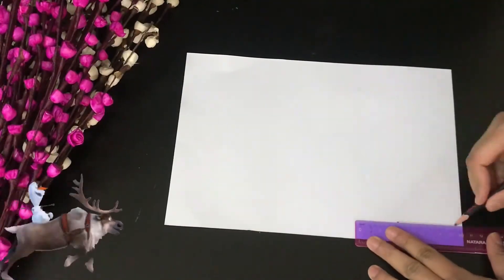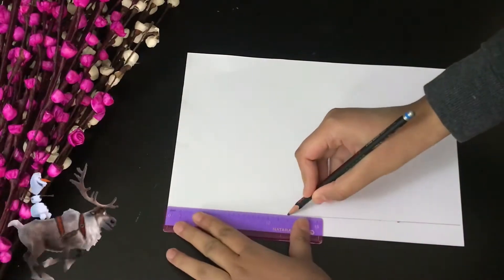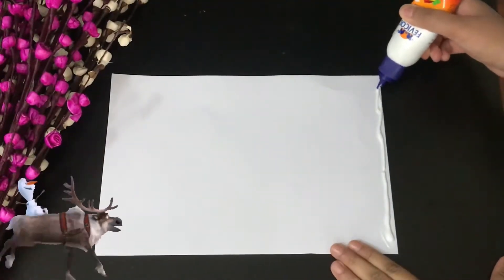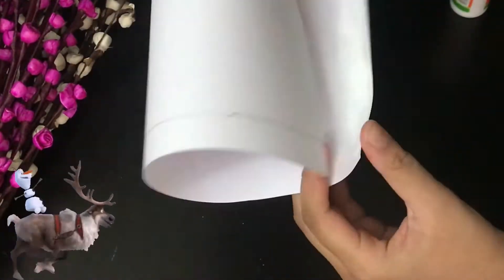For the next DIY, take an A4 size sheet, mark two centimeters from the bottom, flip it and glue as shown. Use a thick sheet for best results.